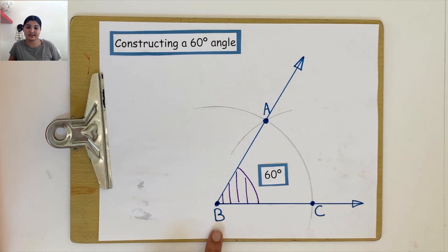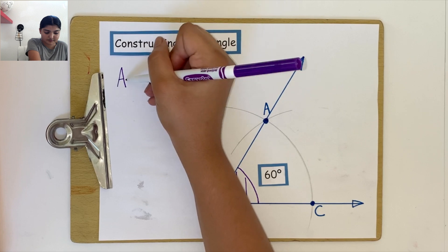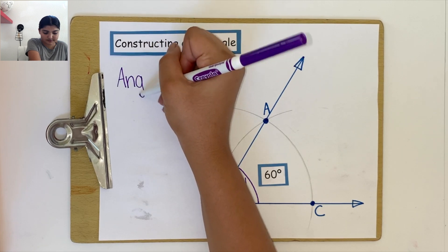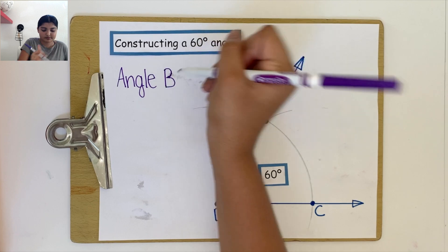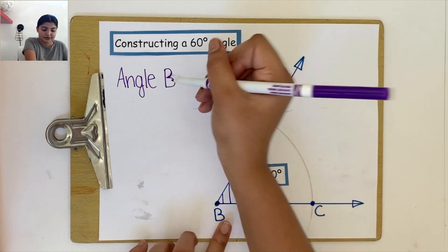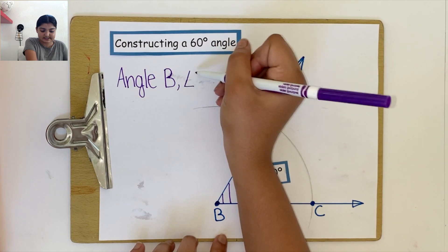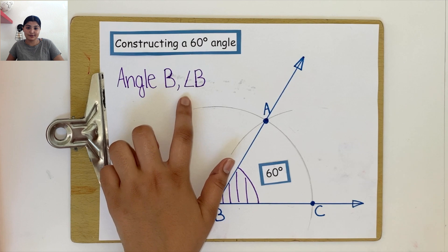We can also label this angle. We can write it in many different ways. We can write it as angle B or by using this symbol, which means angle.